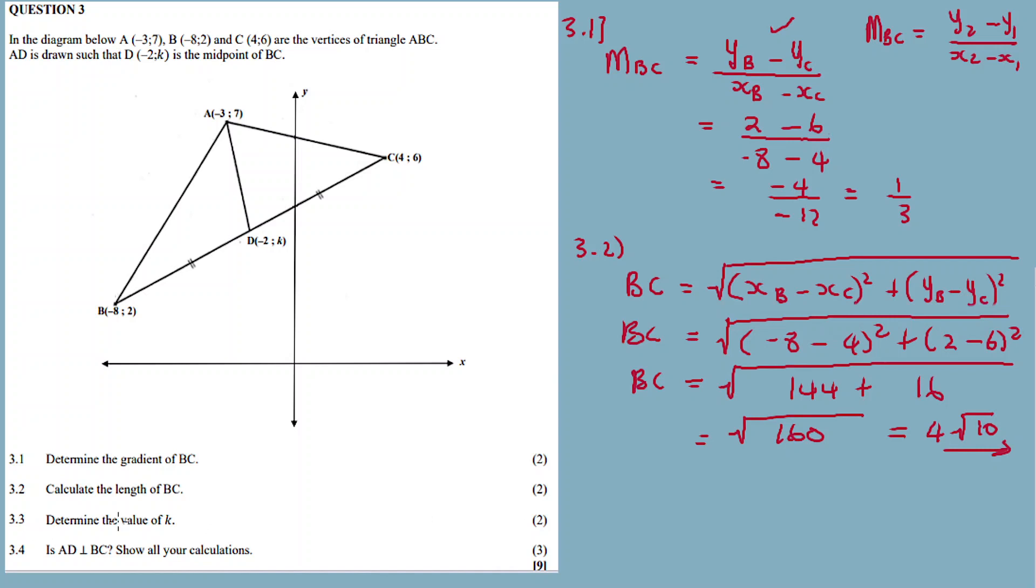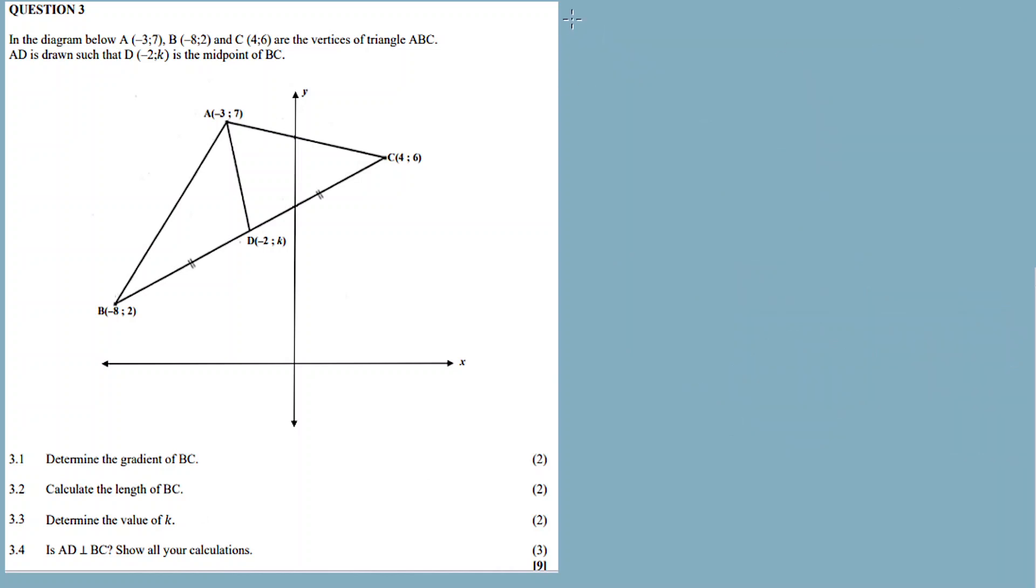For 2 marks, determine the value of k. Point D is the midpoint. So how do we calculate or how do we find the value of k? The midpoint formula: midpoint x, y is equal to, the midpoint is calculated as x2...